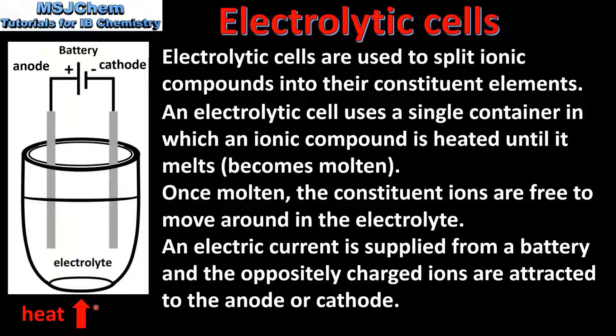The ionic compound is heated until it becomes molten and then it is known as the electrolyte. The ions are attracted to the anode or the cathode where they undergo oxidation or reduction.